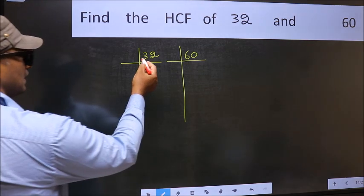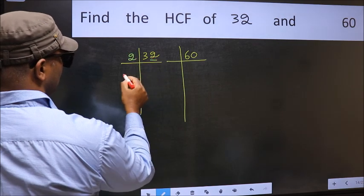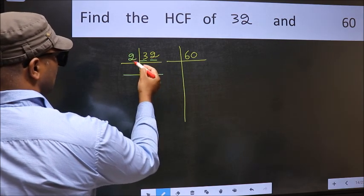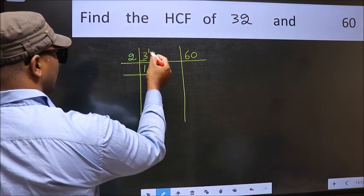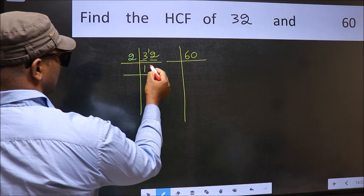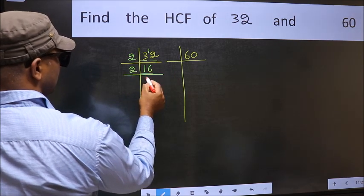Next, in this number, last digit 2, even, so take 2. First number 3. A number close to 3 in 2 table is 2, 1s, 2. 3 minus 2 is 1, 1 carried forward is 12. When do we get 12 in 2 table? 2, 6, 12. Now 16 is 2, 8, 16.